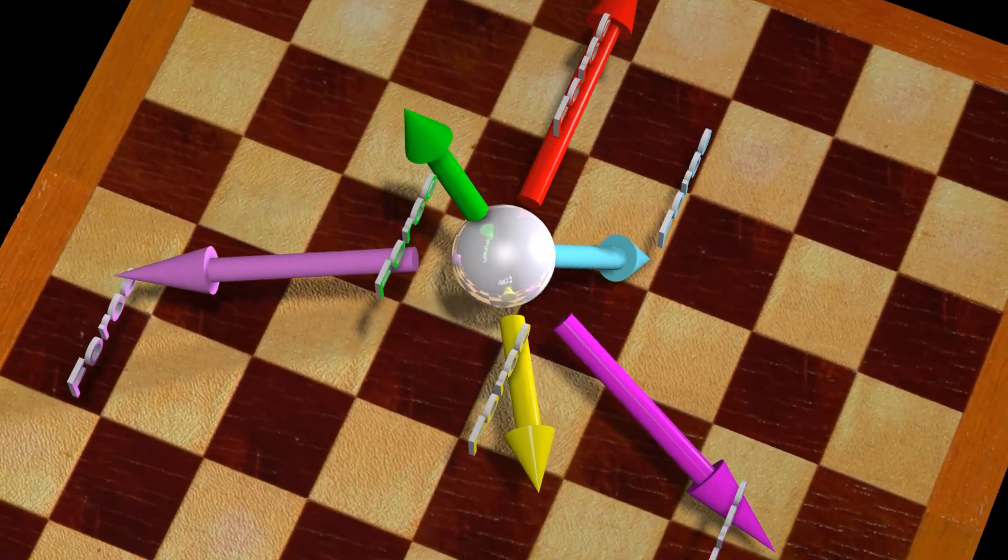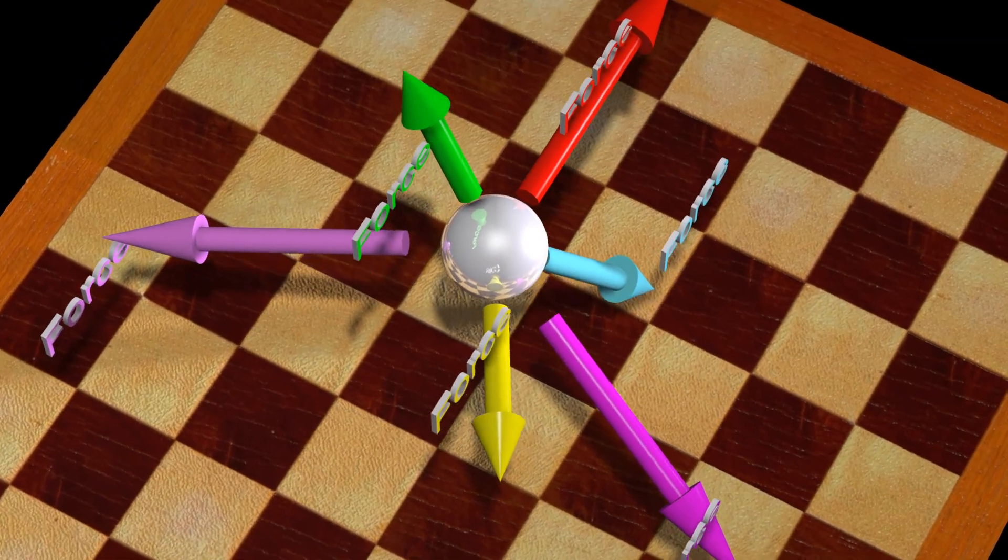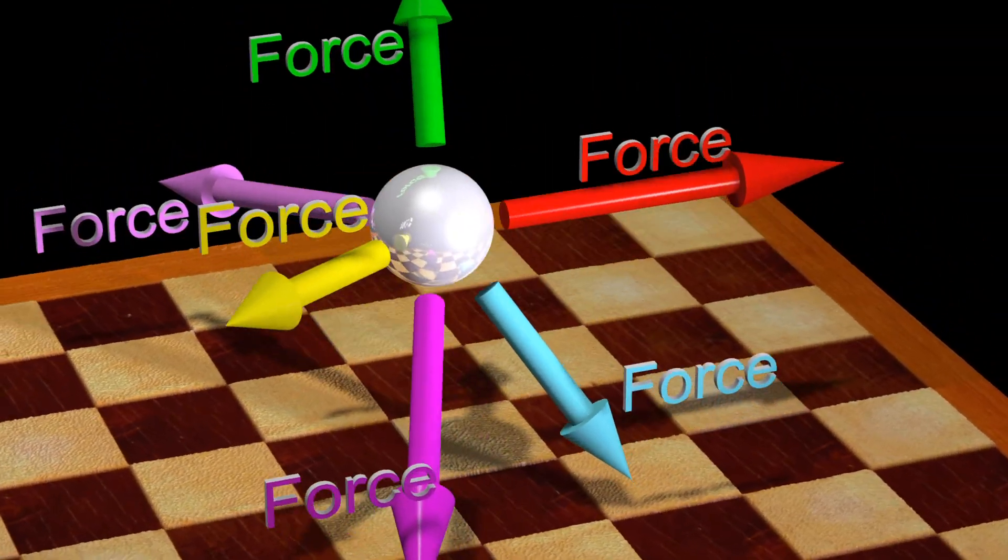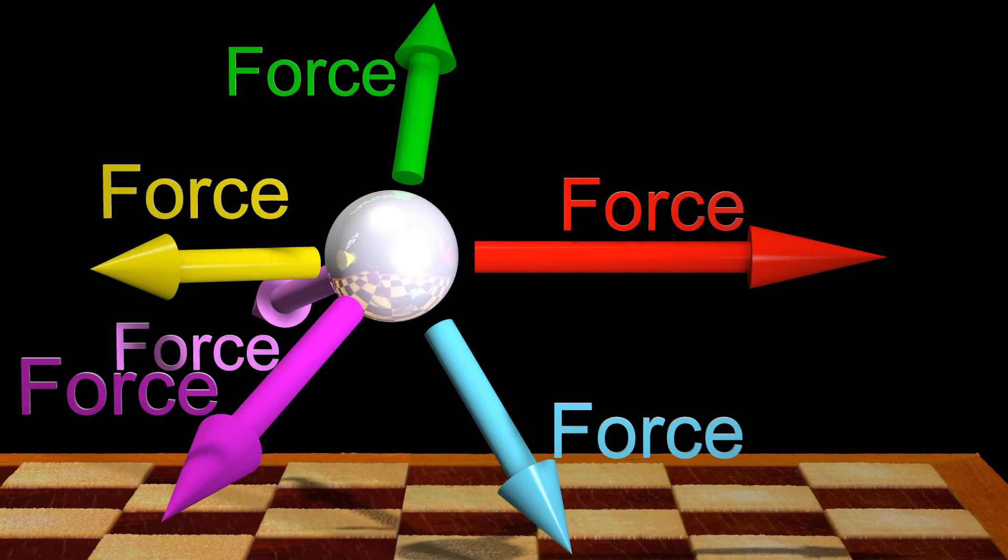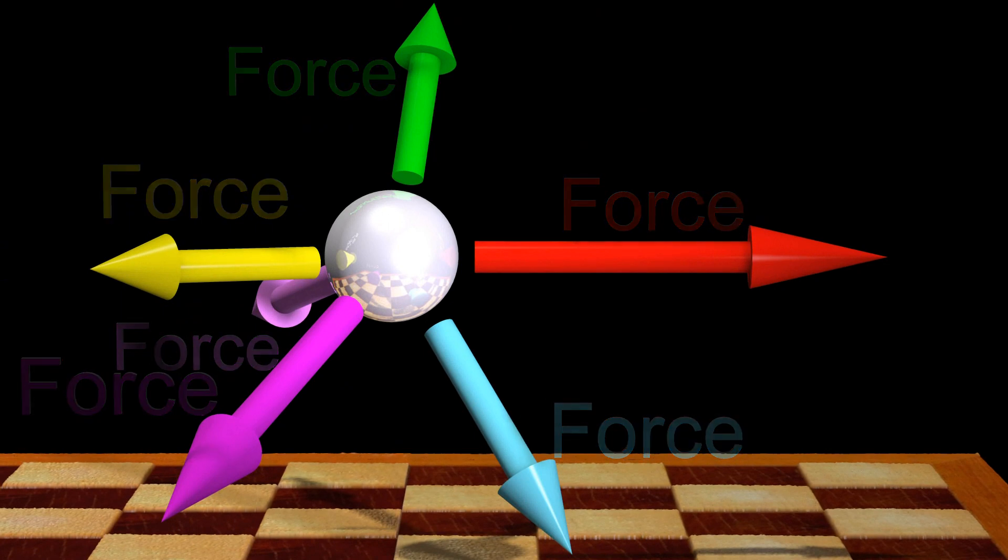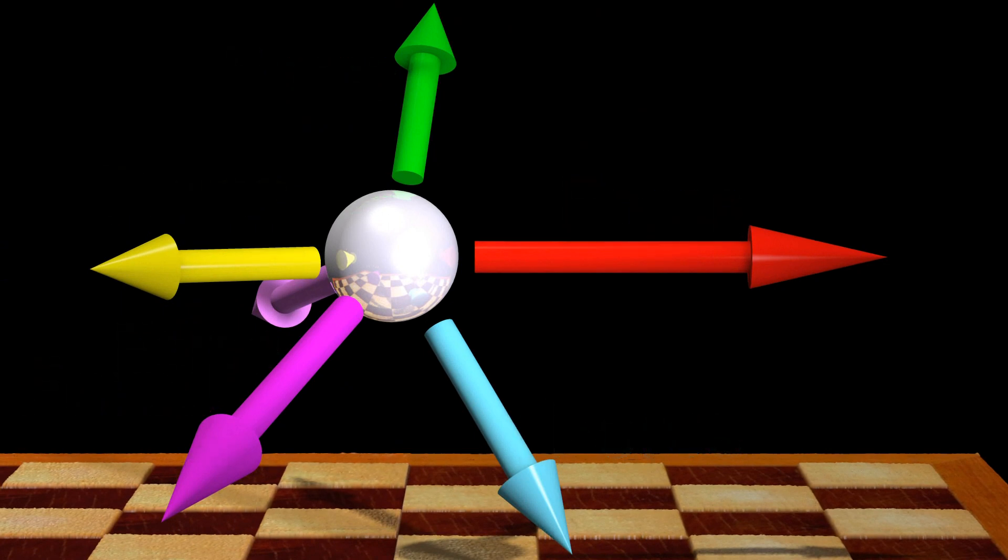If an object experiences several forces at the same time, then the result is the same as if the object experienced just a single force that is represented by all the arrows added together.